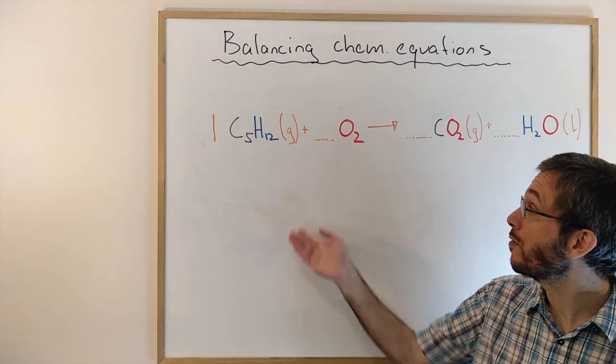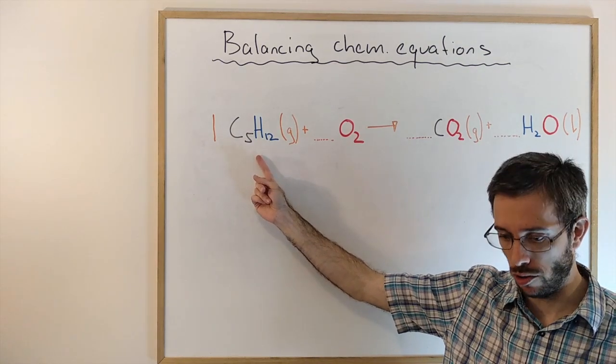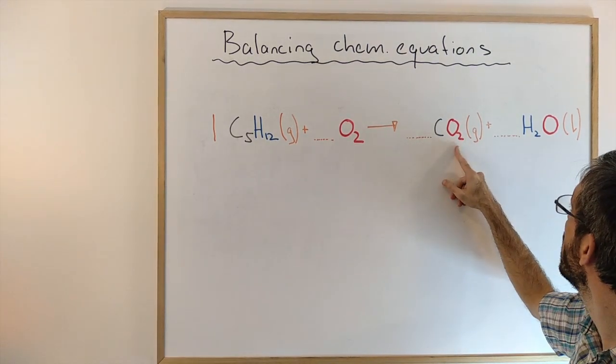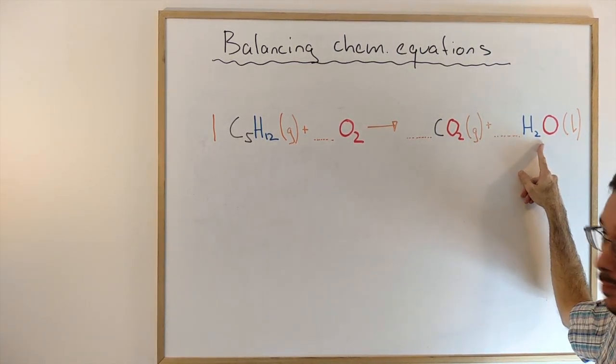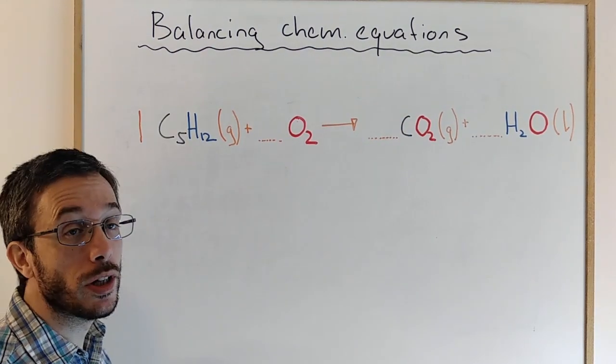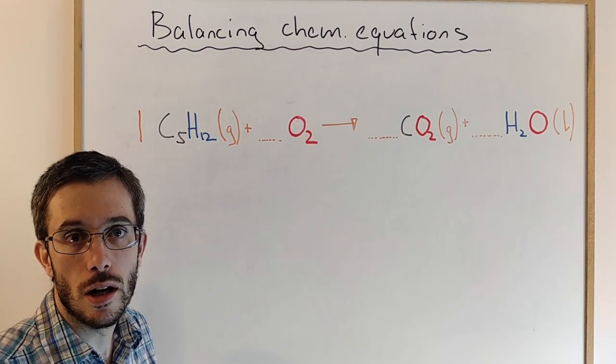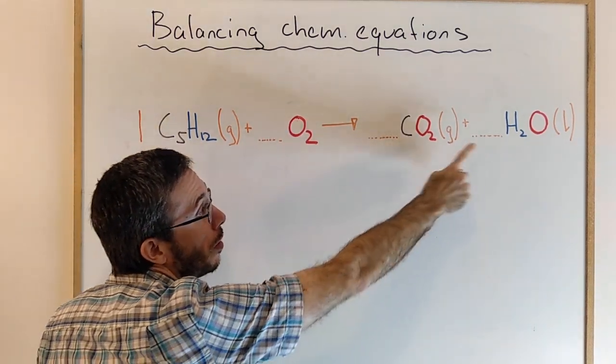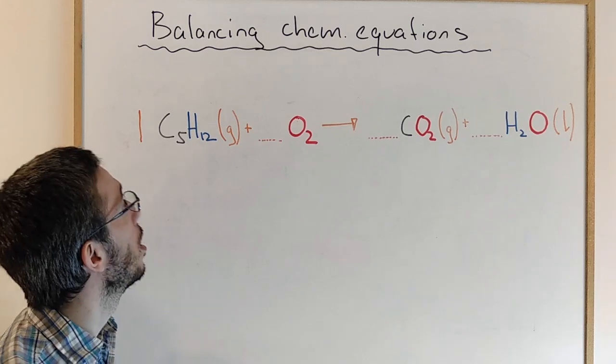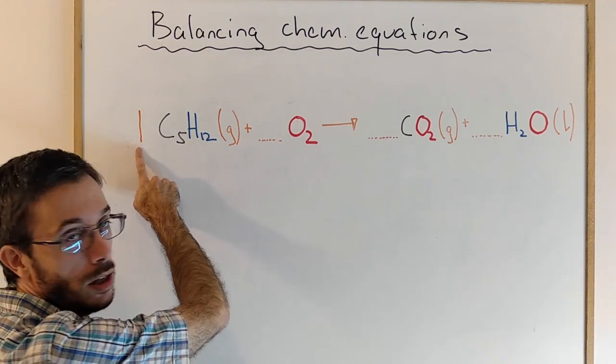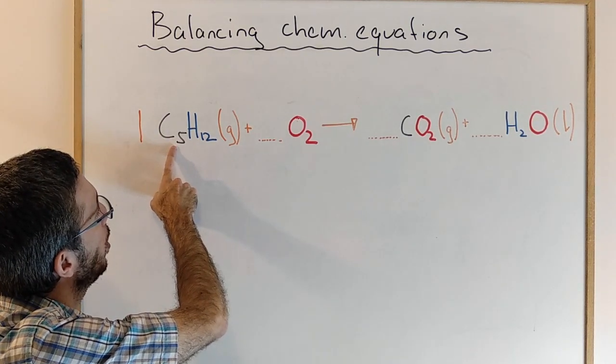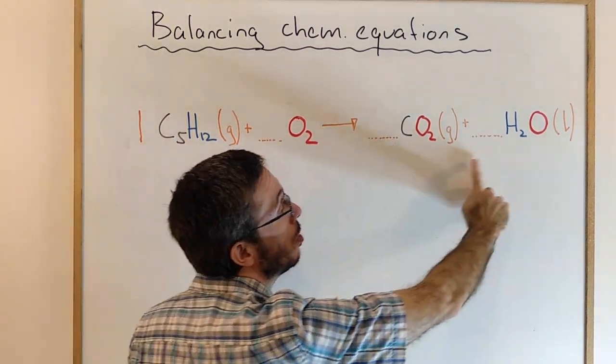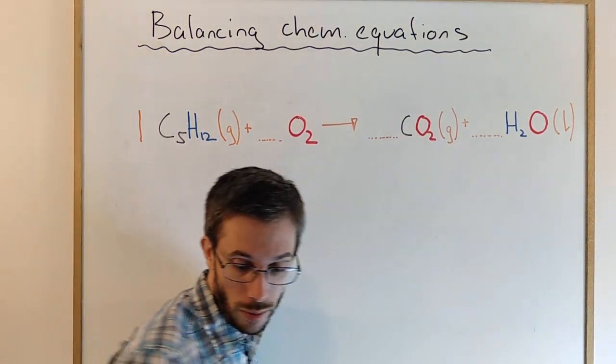On a combustion reaction, you have some type of fuel, in this case a hydrocarbon, that is reacting with oxygen to form carbon dioxide and water. When we observe the reaction, we can often tell what are the compounds involved: C₅H₁₂, O₂, CO₂, and H₂O. But we cannot tell how many molecules of C₅H₁₂ will react with how many oxygen to create how many carbon dioxide and how many water molecules.